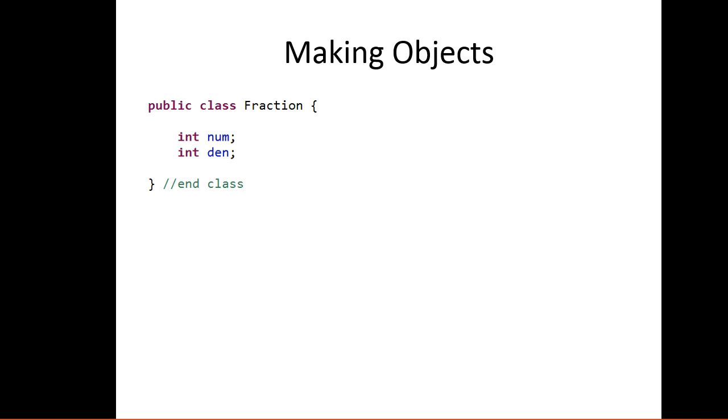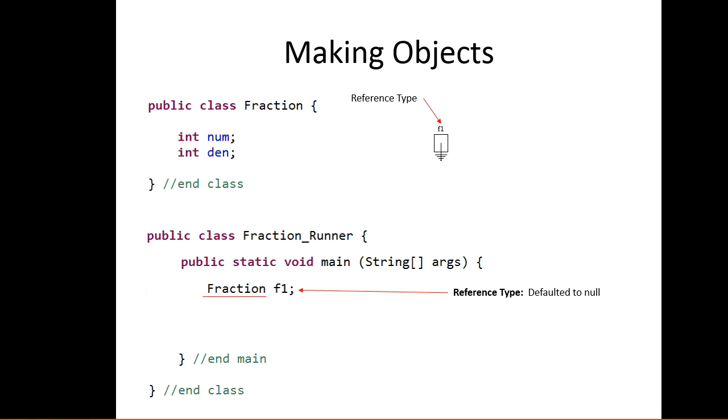Let's talk about how we make objects using our class. Notice the fraction class has no main method. We're going to make a second class called fraction runner where the main method is going to be. When I write fraction f1, this declares a fraction object. This is what's called the reference type. The reference type is a fraction. It's important to note that reference objects, or the reference type, gets defaulted to null, which essentially means I'm reserving a space in memory to point to an object, but right now it doesn't point anywhere. No object's been created yet.